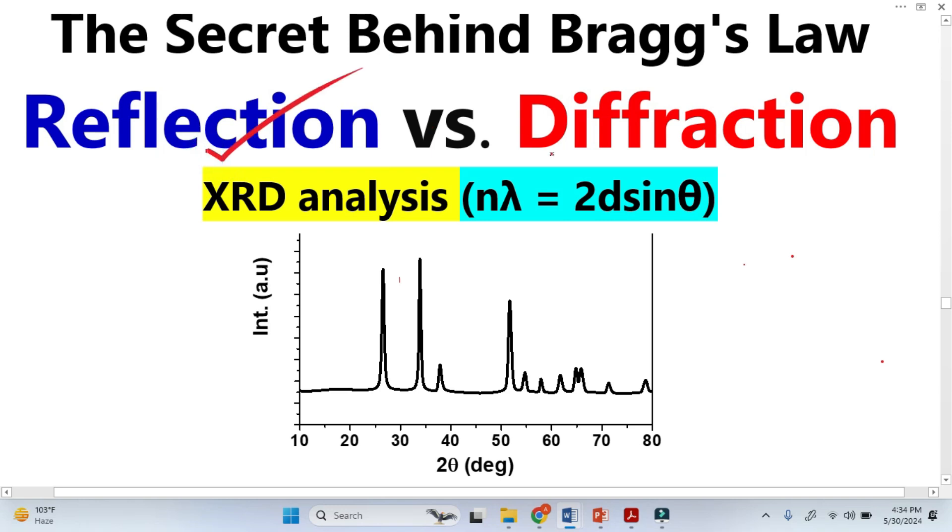Reflection and diffraction are the two confusing words in XRD analysis. This is basically Bragg's law, and people confuse a lot. Sometimes they call this theta reflection angle, sometimes scattering angle, sometimes diffraction angle.